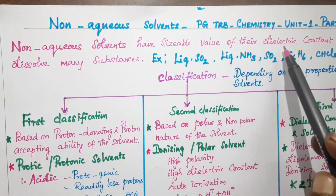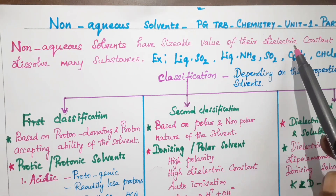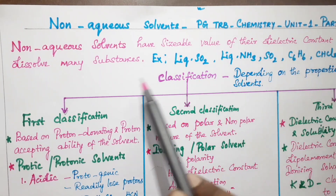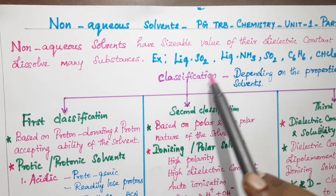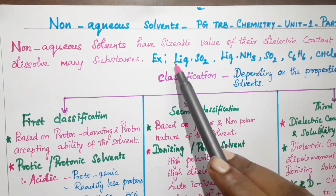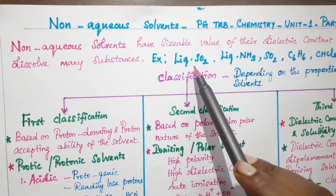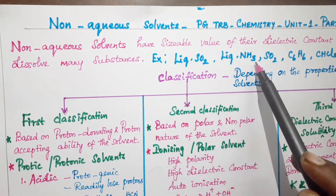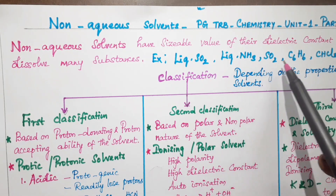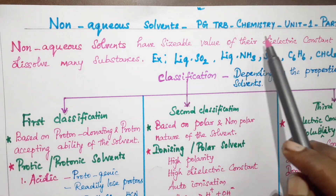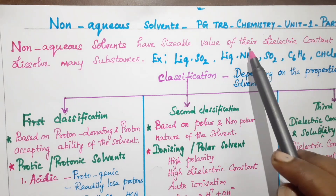Non-aqueous solvents have a respective dielectric constant value (k value) and dissolve many substances. Examples of non-aqueous solvents include liquid sulfur dioxide, liquid ammonia, benzene, and chloroform.